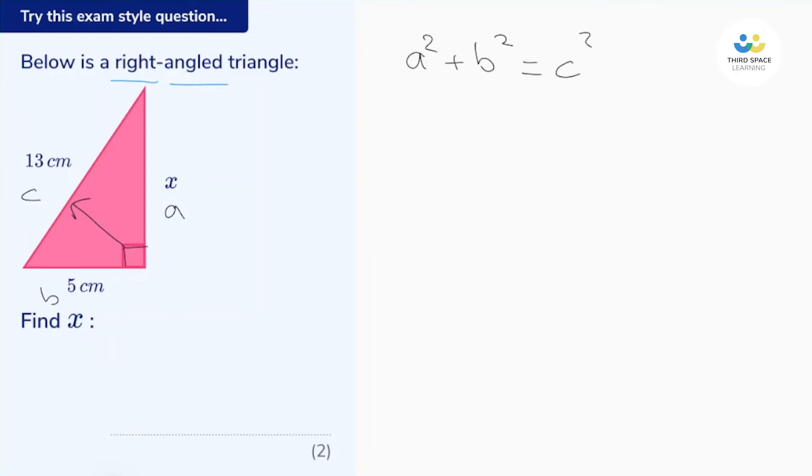Now because we want to work out a, let's rearrange Pythagoras' Theorem. So let's subtract b squared from both sides of Pythagoras' Theorem. Well if we do that, what we're left with is a squared on the left and c squared take away b squared on the right. And this tells me that we're going to square the longest side, we're going to square one of the shorter sides, and we're going to subtract them.